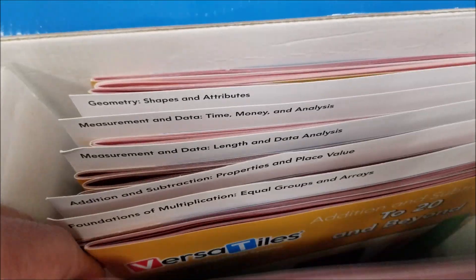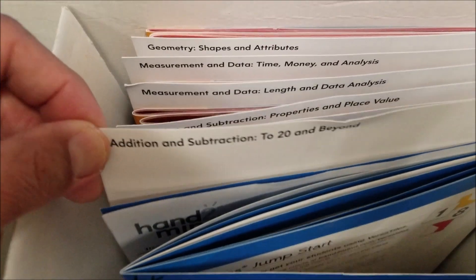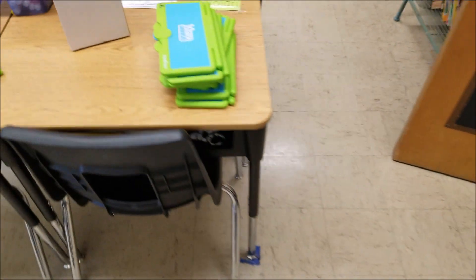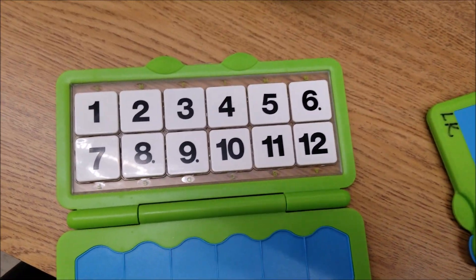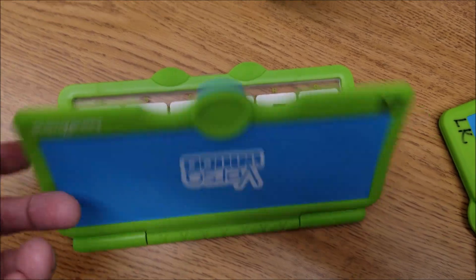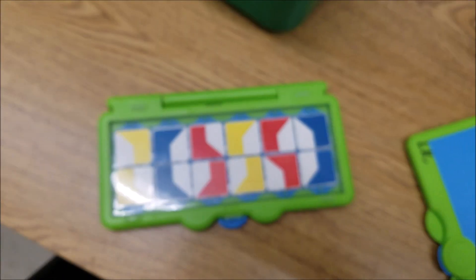And another addition and subtraction up to 20 and beyond. So it comes with eight of the Versatiles Kits. It's going to have numbers 1 through 12. Let me go ahead and show you how this works.